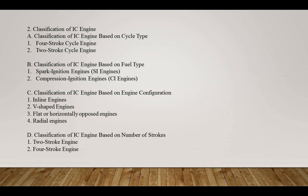In the two-stroke cycle engine, the piston completes two strokes — one up stroke and one down stroke — to complete one cycle. The two strokes are the compression stroke and the power stroke. The air-fuel mixture is drawn into the crankcase during the compression stroke. As the piston moves upward, it compresses the air-fuel mixture in the crankcase. When the mixture is compressed, it is forced upward into the cylinder through the transfer port. The spark plug ignites the mixture, causing rapid expansion of gases, which pushes the piston down. In the exhaust stroke, the burnt gases are expelled from the engine.